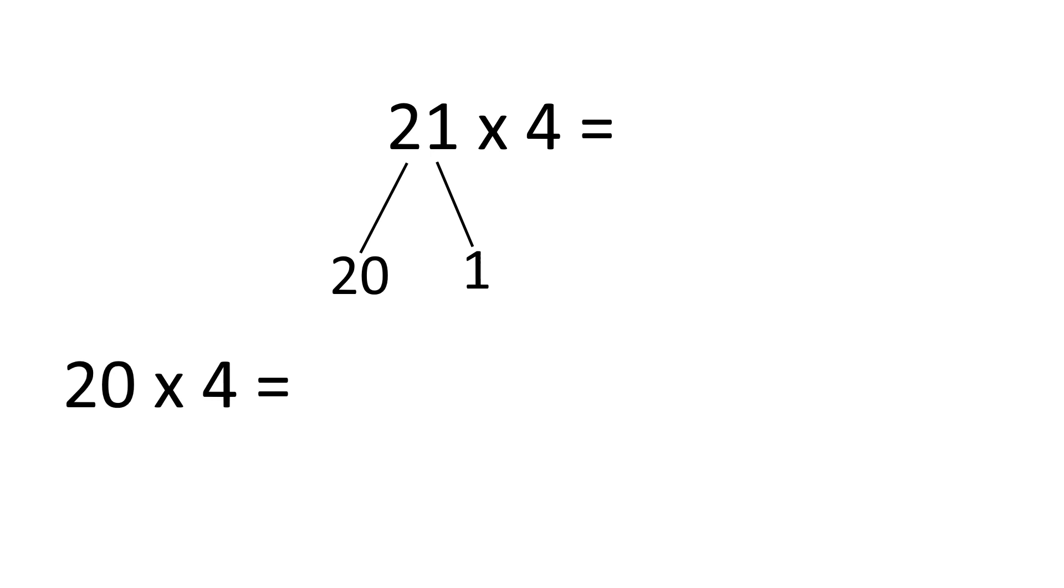20 times 4 is equal to 80. If I know that 2 times 4 is equal to 8, then I know that 20 times 4 is equal to 80. 1 times 4 is equal to 4.